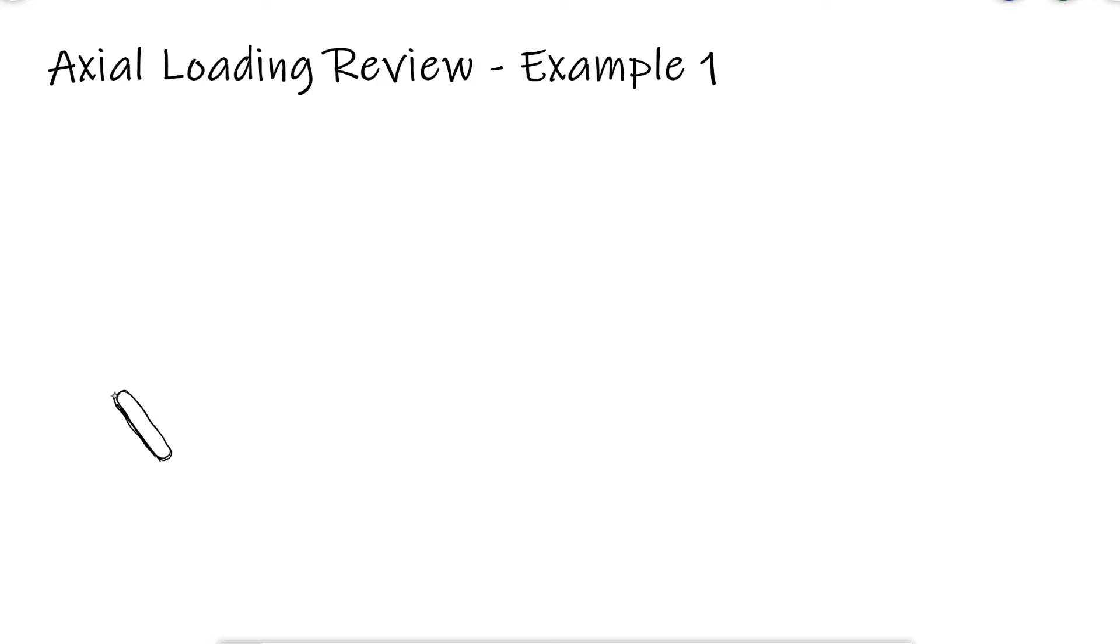An external moment of 1500 N·m is applied to the crank of an engine. If a load P is holding the engine system in the position shown, what is the average normal stress in the connecting rod BC which has a uniform cross-section area of 450 mm² and what is the load P?